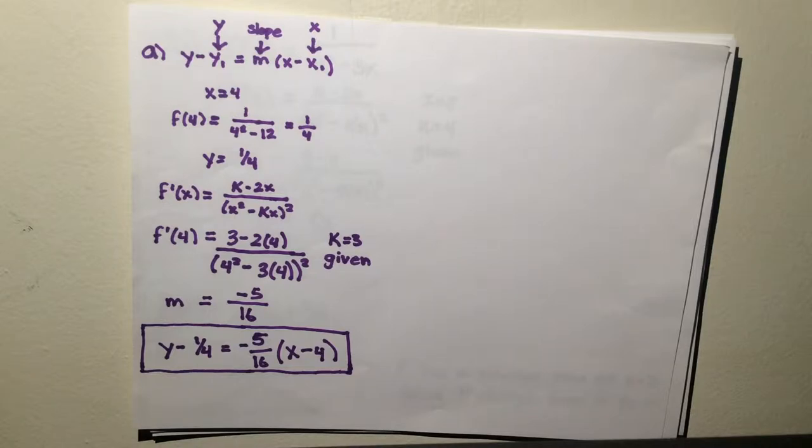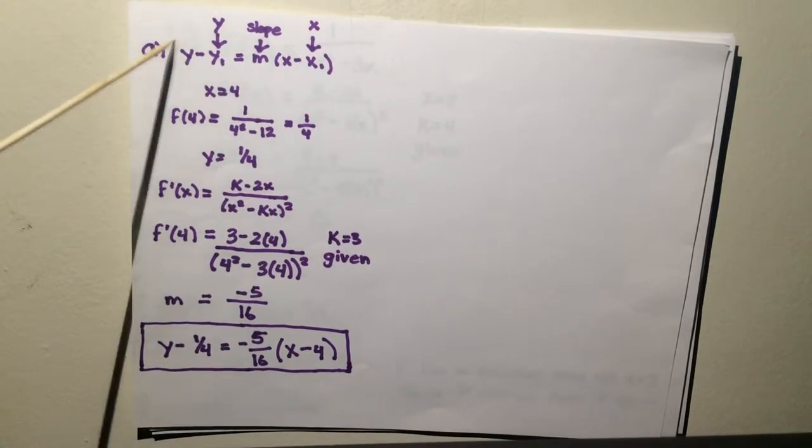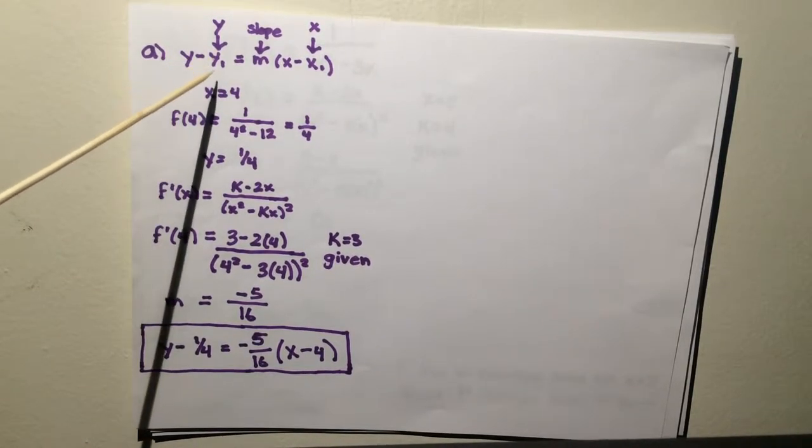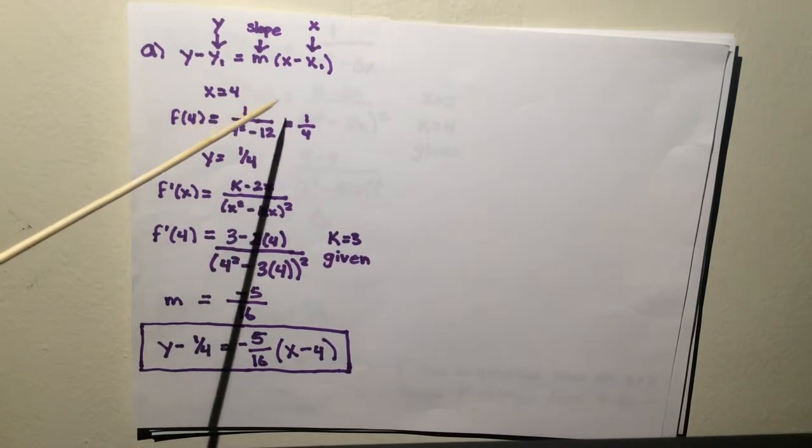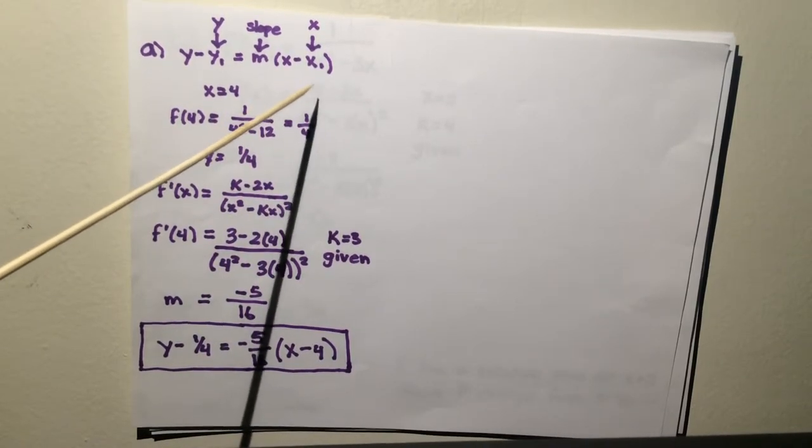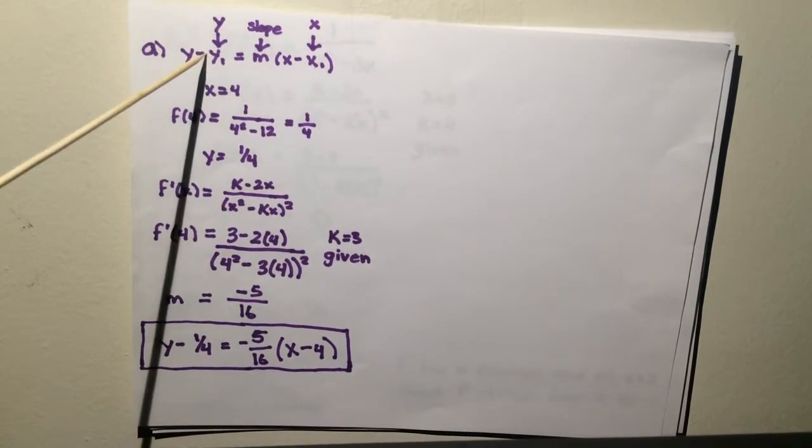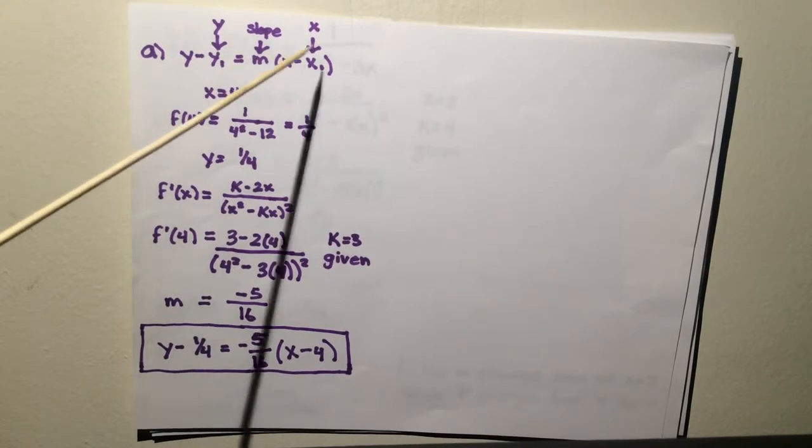For part a, let k equals 3 so that f(x) equals 1 over x squared minus 3x. Write an equation for the line tangent to the graph of f at the point whose x-coordinate is 4. To find the tangent line, you need the point-slope formula, which is y minus y1 equals m times x minus x1. So you need to find your y, your slope, and your x.